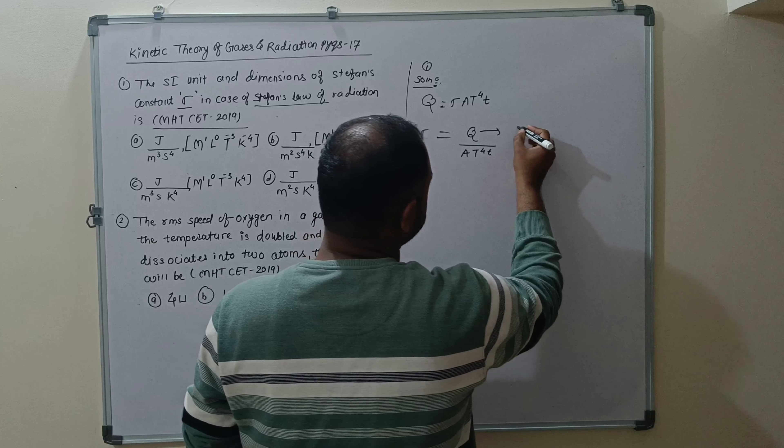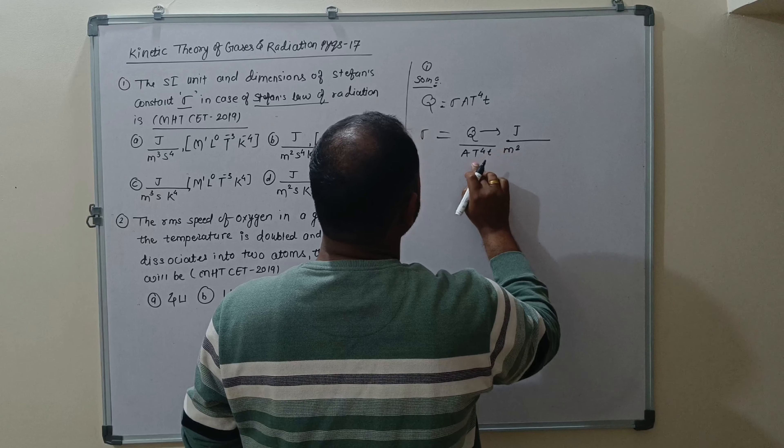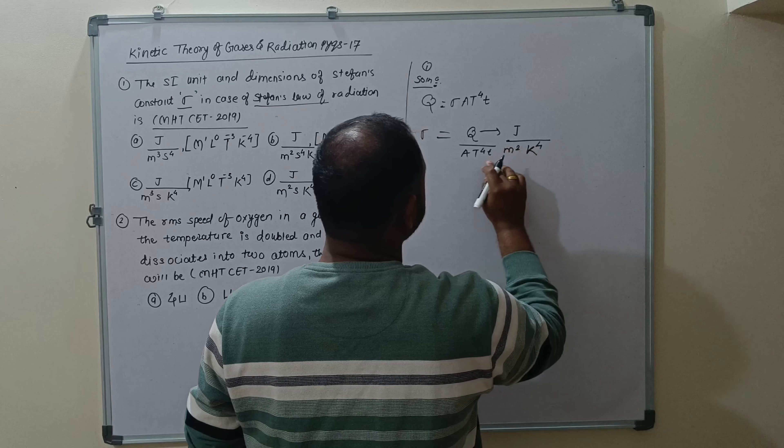The amount of heat energy is Joules. Area is meter square. When T comes to temperature, temperature is Kelvin. Kelvin to the power 4. When t comes to time, time is second.